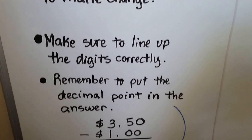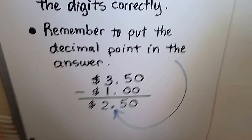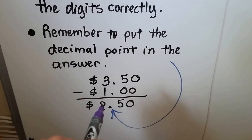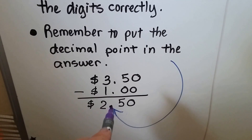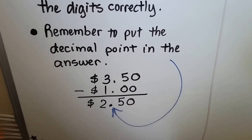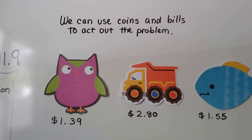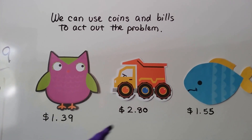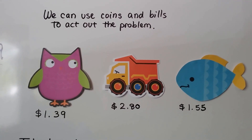Make sure to line up the digits correctly and remember to put the decimal point in the answer. What's on this side of the decimal point is dollars and what's on this side are the cents, so you have to keep your dollars away from your cents. We have a toy owl for $1.39, a toy truck for $2.80, and a toy fish for $1.55.